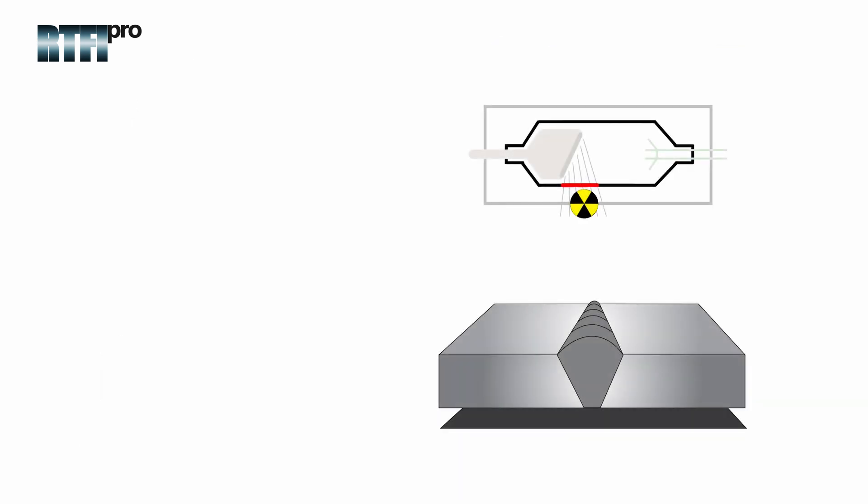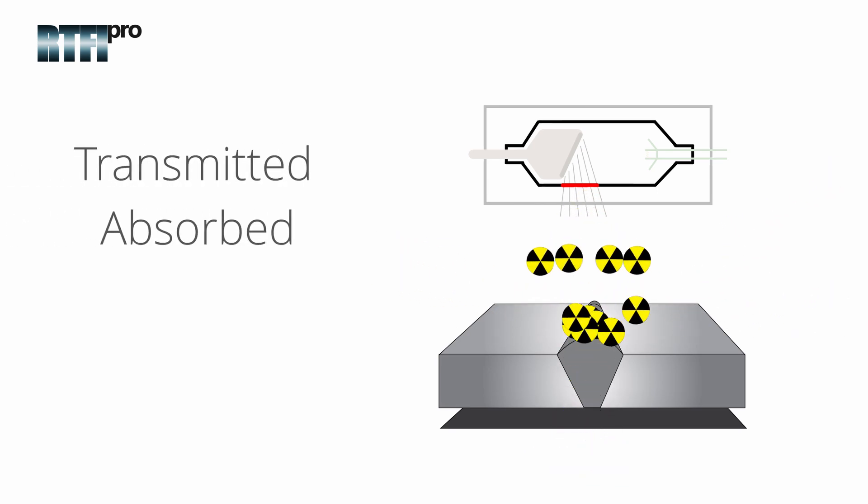When a beam of radiation comes in contact with an object such as a weld, the radiation is either transmitted, absorbed, or becomes scattered.